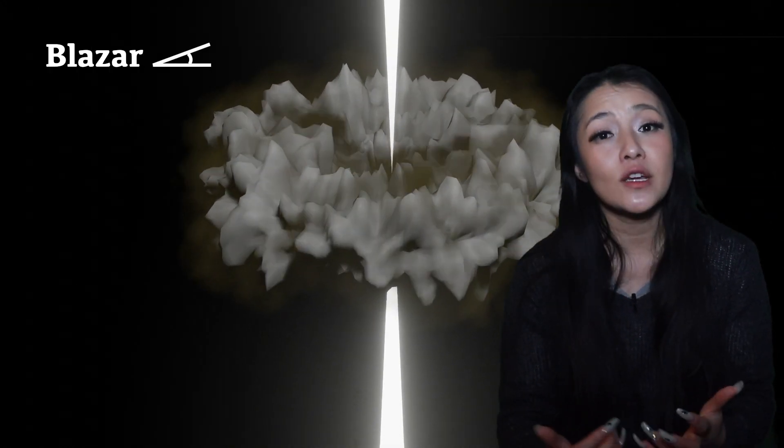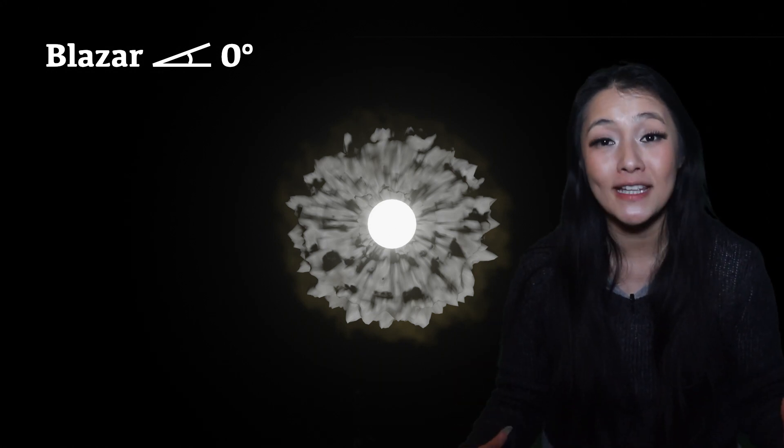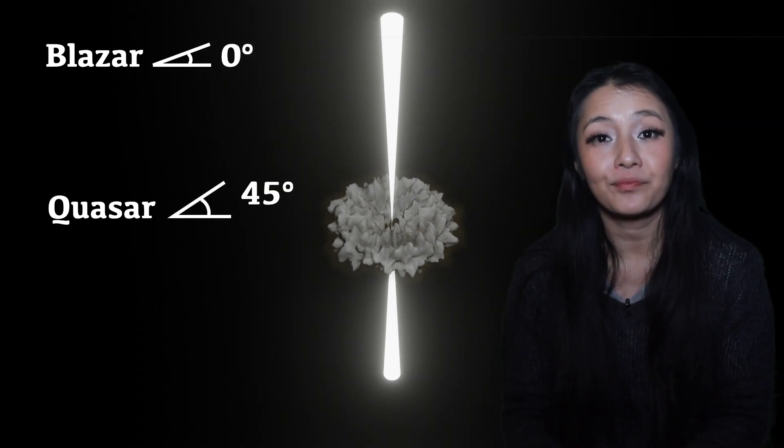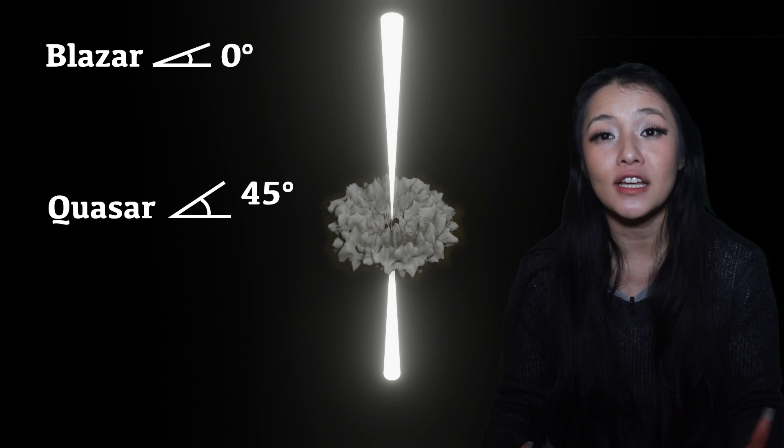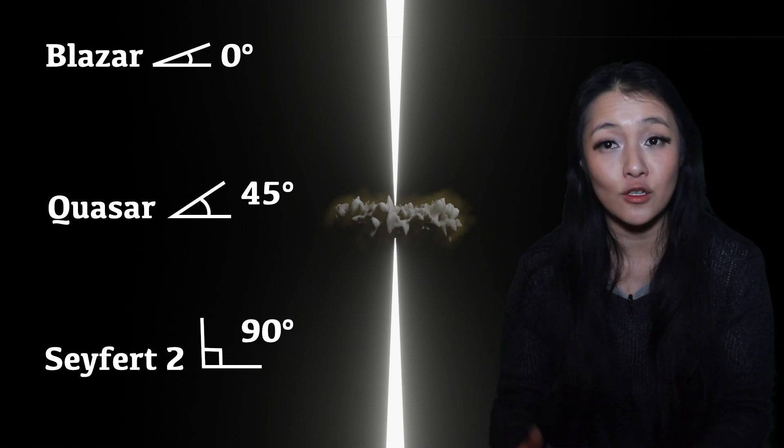Depending on the direction that you view an AGN, you might also hear different names. Blazars are essentially quasars viewed directly along the jet, and this means that they're even more luminous than quasars, which are typically seen from 45 degrees from the jet. The latter are much more common in the universe. And you also get Seyfert-2 galaxies that are essentially AGN observed along the dusty torus. So there you have it, AGN are black holes. But not just the black holes themselves, they also encompass the active regions around a black hole, and can also be further categorized into blazars, quasars, and Seyfert-2 galaxies.